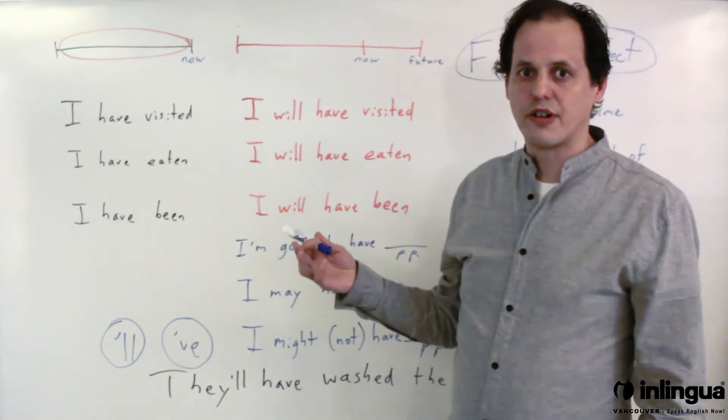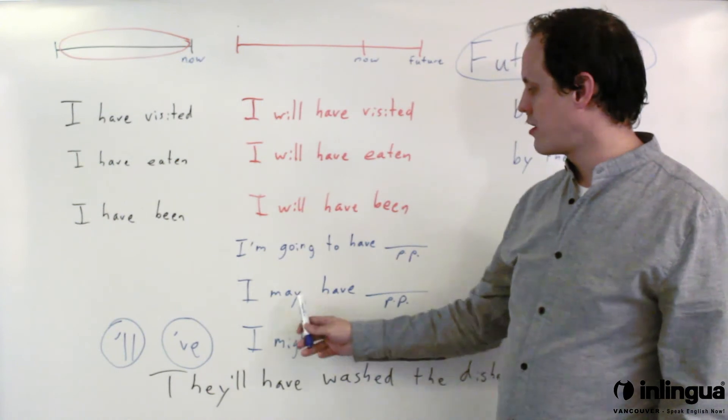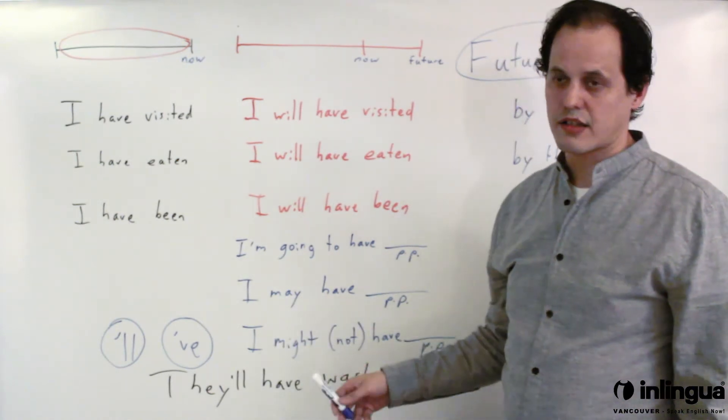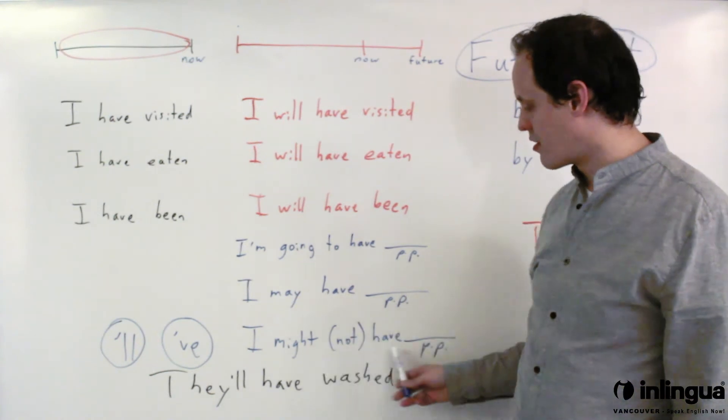Or if you're not sure about the outcome of the future you might use a different modal verb like may or might or might not, I may have or I might not have.